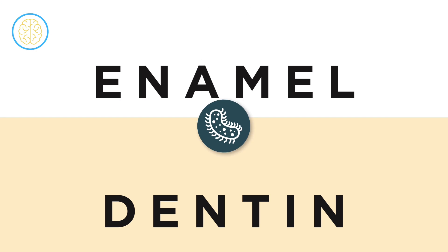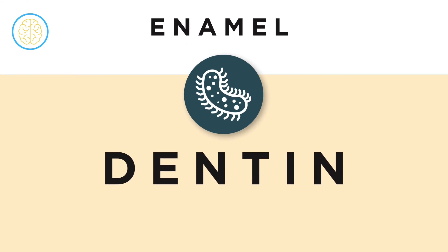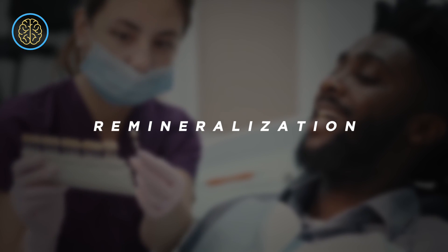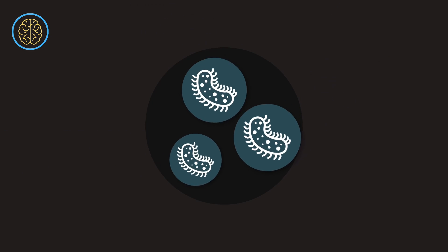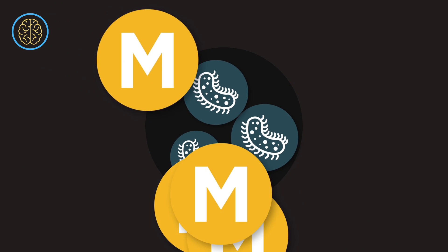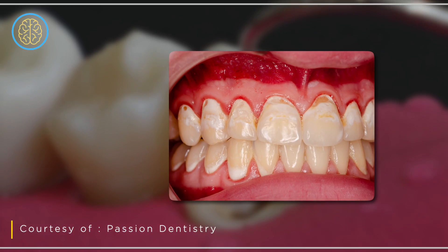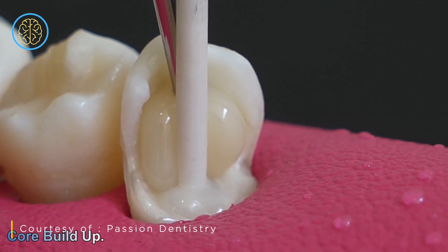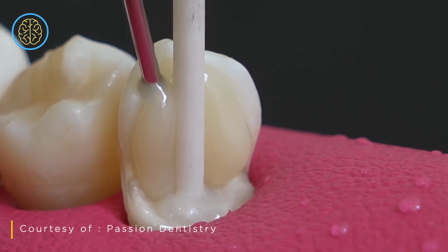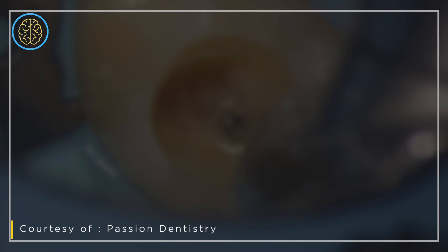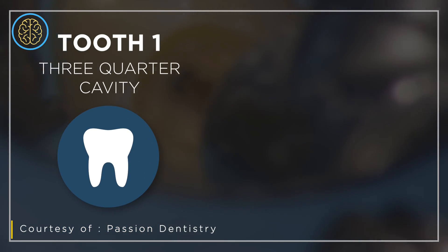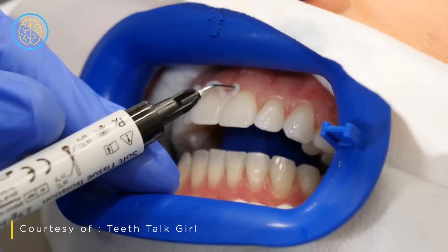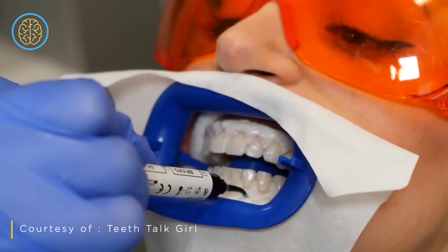Once bacteria breach the enamel and reach the dentin, the process of demineralization accelerates. But here's the good news: there's another state called remineralization, and ideally your teeth should be in this state 99% of the time. Remineralization is the process of replenishing minerals into the holes left by bacteria, potentially filling them in. When your teeth are in this state, there's a good chance it can restore the structure of your tooth, especially if the cavity is limited to the enamel. The key takeaway is to prioritize remineralization — the following tools will ensure you maintain that state at all times.